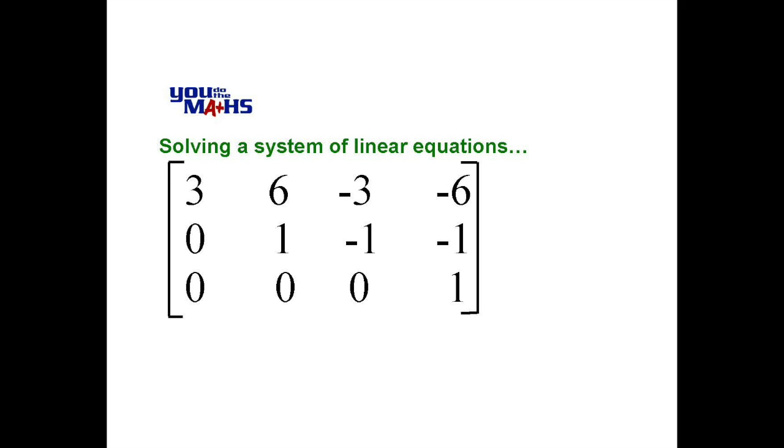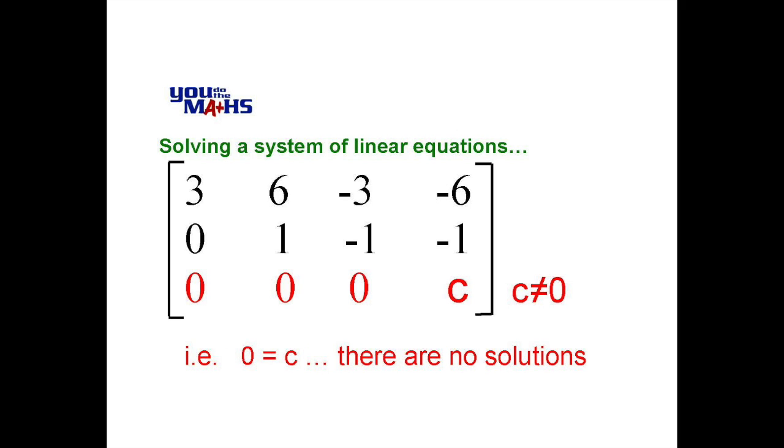And our last row becomes all zero with 1 in the last entry. So we need to ask ourselves what that means. Our last row indicates the equation 0x plus 0y plus 0z is equal to 1, or the left-hand side becomes 0, so that the equation is 0 equals 1. So we now have a case where 0 is equal to some non-zero number. That doesn't make sense.